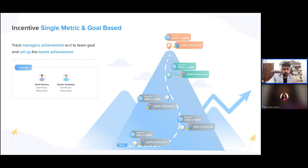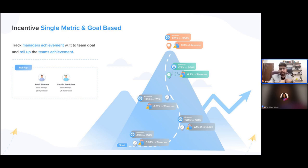Looking at a more detailed view of incentive structure: there can be three levels of hierarchy. For example, one person might have a target of $100,000 in a year. As a team manager with 10 such people, I have a bigger target. We created a roll-up based on team achievement — person A, B, and C each contribute differently: some at 60%, some at 130%, some at 20%. As a team manager, I have a different percentage calculation on my incentive. This single-metric, goal-based roll-up is built into LeadSquared.